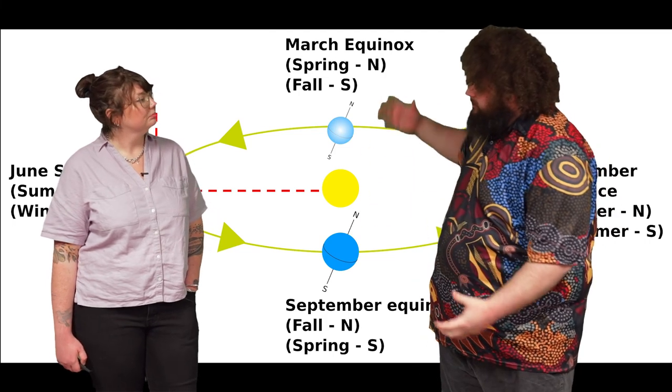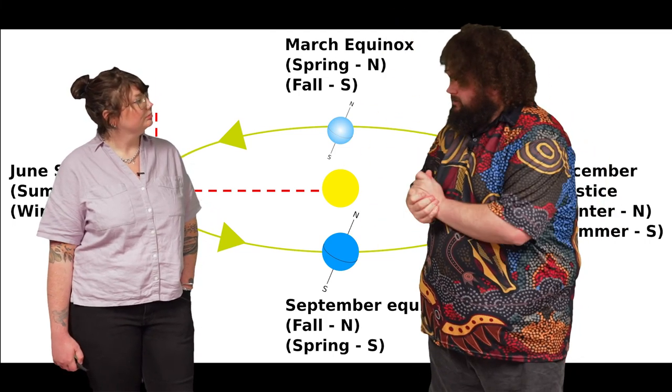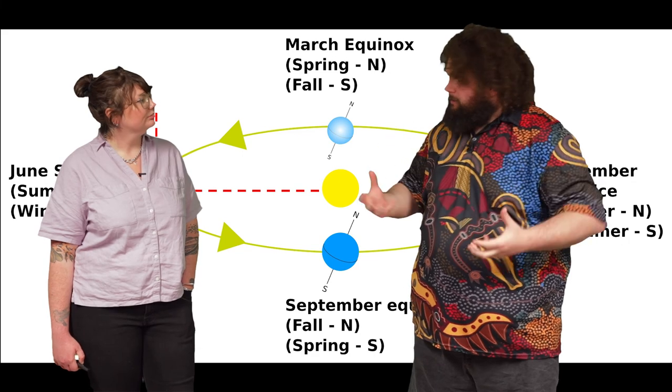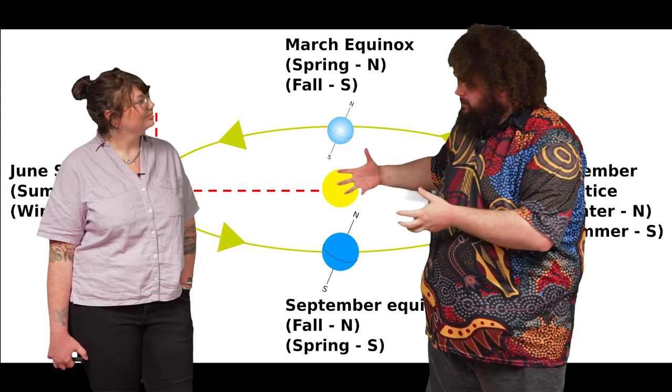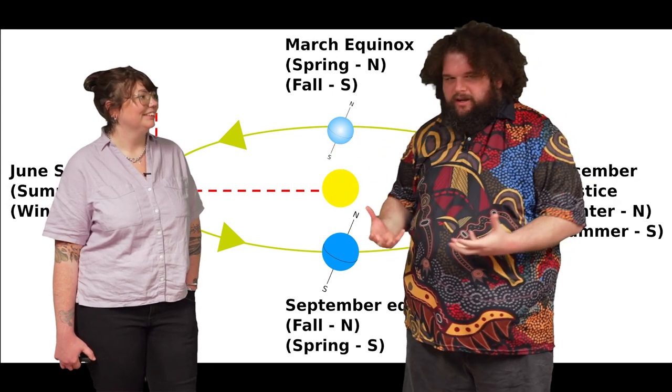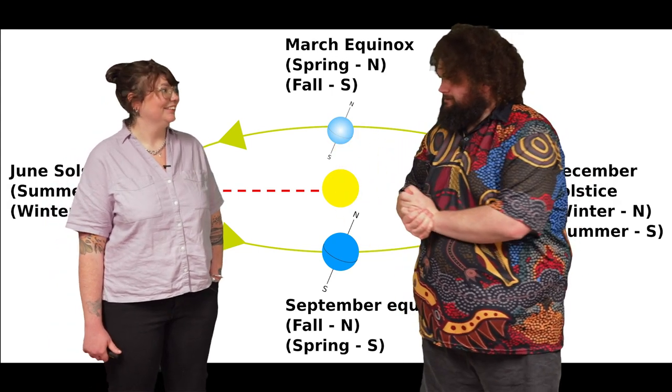And in the extreme cases where we see the North Pole and the South Pole, at the peak, so at that point of the summer solstice, they actually have complete daylight in their summer and complete night time in their winters. Wow.